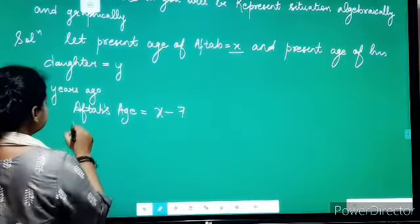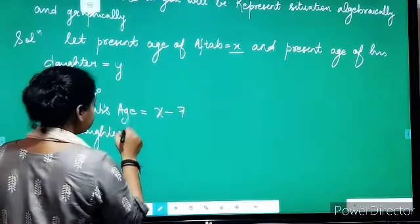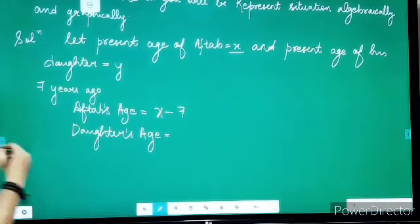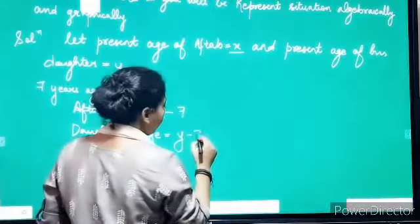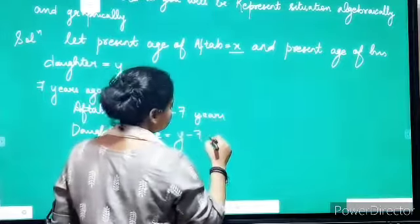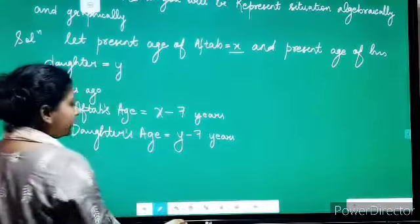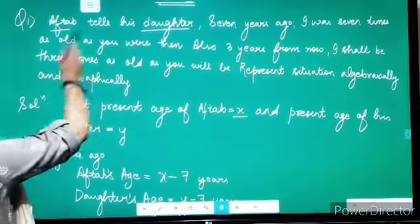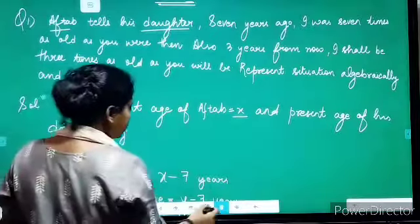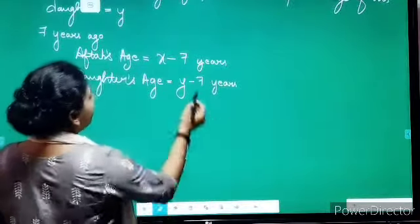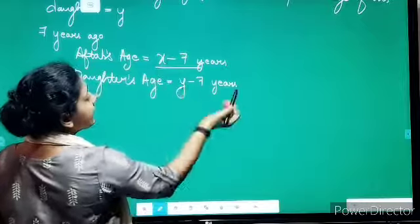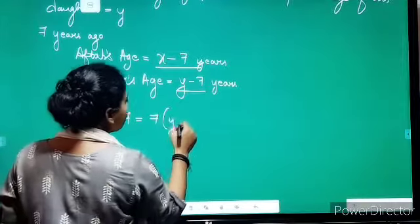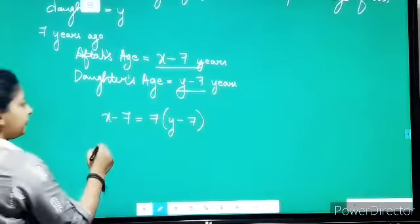And the daughter: presently she is y years old, so 7 years before this she would have been y minus 7 years old. In the question, it is given that 7 years ago Aftab was 7 times as old as the daughter. This means Aftab's age is 7 times the age of the daughter.